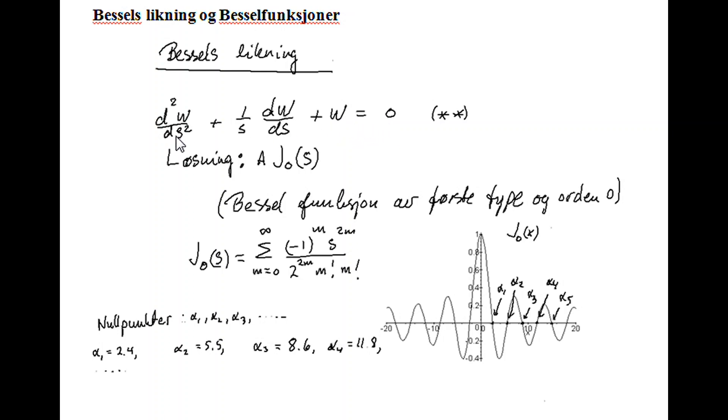Do not be confused that we use the variable s here. It could be x, if you like, but that's only not to confuse you later on. The solution of this Bessel equation is of this form, where a is some constant, and J0 is a Bessel function of first type and order 0. And it can be shown that this function is equal to the following infinite series.